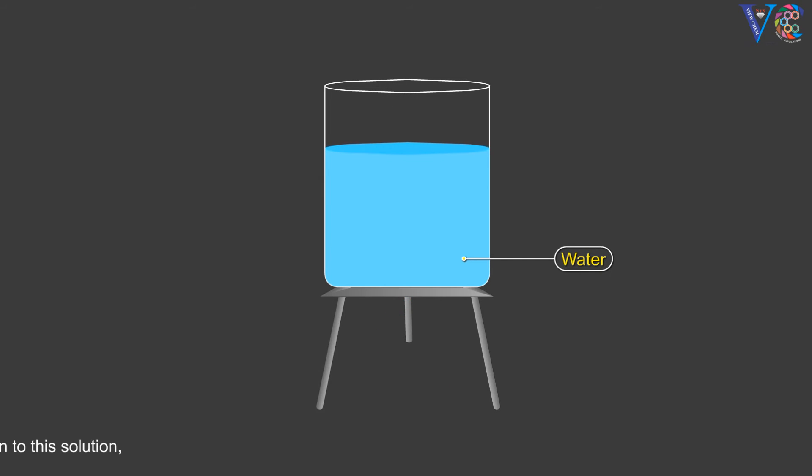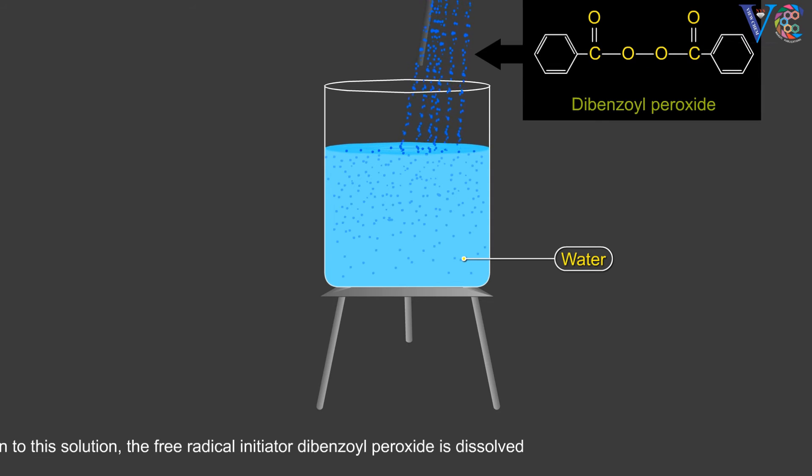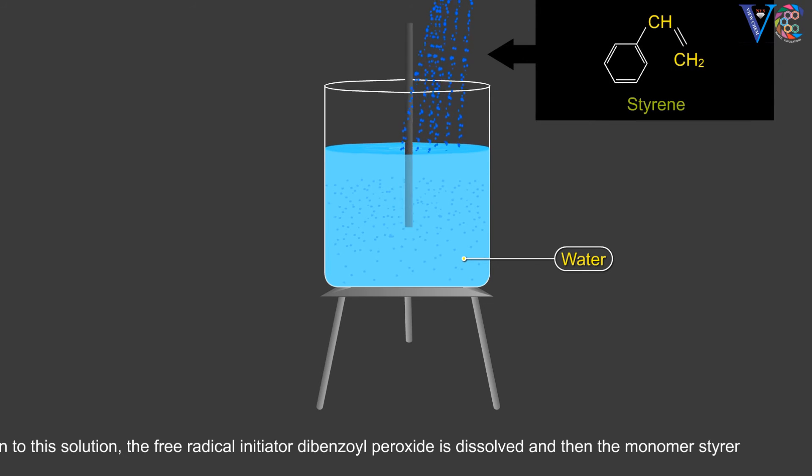Into this solution, the free radical initiator benzyl peroxide is dissolved, and then the monomer styrene is added.